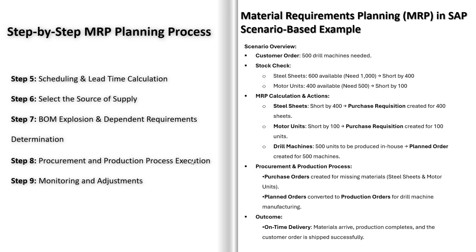Here's what SAP suggests: steel sheets are short by 400, so SAP creates a purchase requisition to buy them from a supplier. Motor units are short by 100, so another purchase requisition is created. For drill machines, since these are produced in-house, SAP creates a planned order for 500 machines. MRP does all this instantly, ensuring that procurement and production teams know exactly what to do next. The purchase requisitions are converted into purchase orders and sent to suppliers, while the production team converts the planned order into a production order so manufacturing can begin.